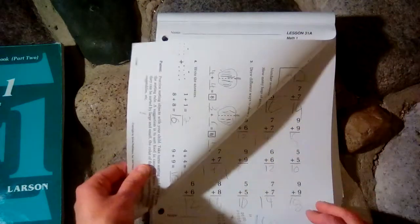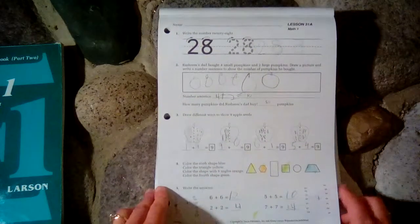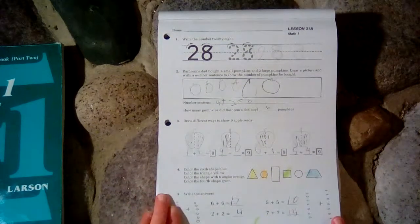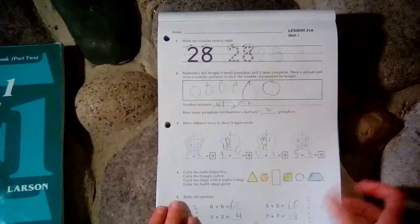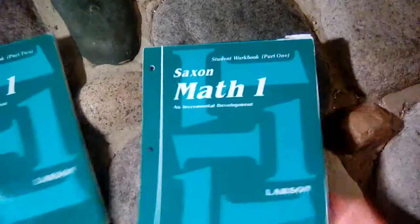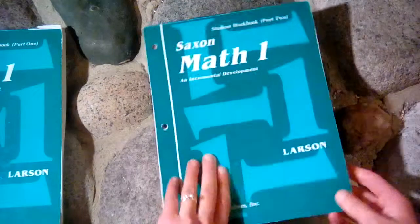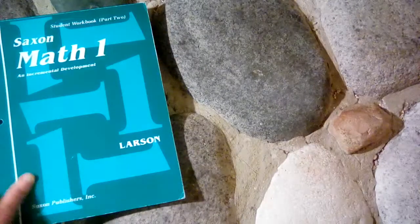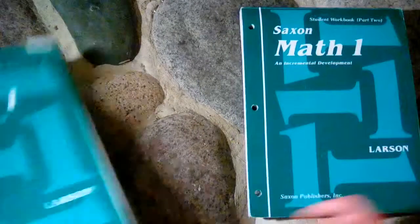So this is what they look like. There is a second side to the worksheet, but I don't really think the second side is necessary to do unless your child needs extra practice. If you look in the teacher's materials, it does explain that the second side is for homework. So I think that was intended for a classroom. So really one side is needed, in my opinion. So I'll show you toward the end of the second workbook so you can see how advanced it gets by the end of the school year.